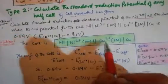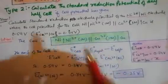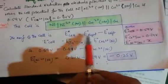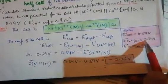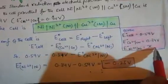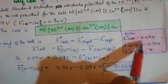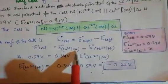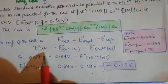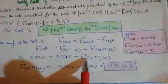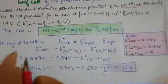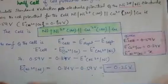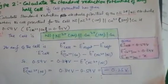Since concentration is 1 mole, this is a standard condition. E°cell = E°right − E°left, where copper is on the right and nickel is on the left. E°cell = 0.59 volt, E°(Cu²⁺/Cu) = 0.34 volt, and E°(Ni²⁺/Ni) is unknown. Substituting: 0.59 = 0.34 − E°(Ni²⁺/Ni). Solving gives E°(Ni²⁺/Ni) = −0.25 volt.